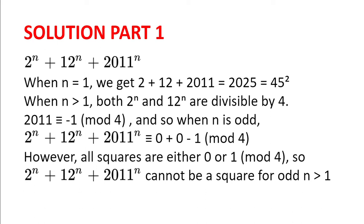And so 2 to the power of n plus 12 to the power of n plus 2011 to the power of n is minus 1 modulo 4. However, all squares are either 0 or 1 in modulo 4. And since minus 1 is neither 0 nor 1, 2 to the power of n plus 12 to the power of n plus 2011 to the power of n cannot be a square for odd n greater than 1.